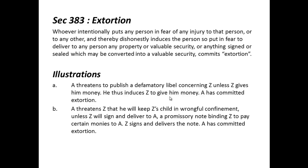Illustration B: Person A tells Z that he will keep Z's child in wrongful confinement unless Z signs and delivers a promissory note. A promissory note is a note in which one person promises to pay some amount in future, making it a binding document on which the other person can later claim money. So A threatens Z and out of that fear Z signs and delivers the promissory note — the extortion is complete.